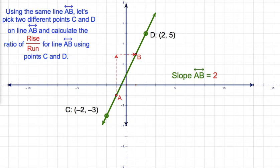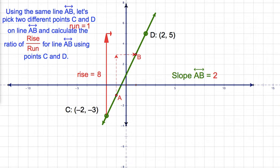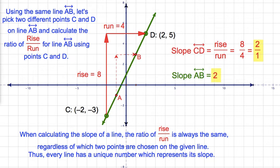Using the same line AB, let's pick two different points C and D on line AB and calculate the ratio of rise to run for line AB using points C and D. When calculating the slope of a line, the ratio of rise to run is always the same regardless of which two points are chosen on the given line. Thus, every line has a unique number which represents its slope.